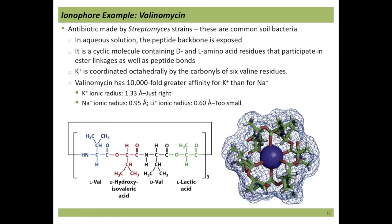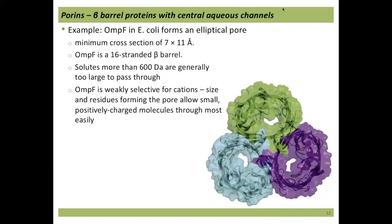There are other pores such as porins — for example, OmpF in E. coli, which forms an elliptical pore. We've seen these porins before when talking about beta barrel structures. OmpF is a 16-strand beta barrel that allows solutes under 600 Daltons through, and it is weakly selective for cations, most easily passing small positively charged molecules.